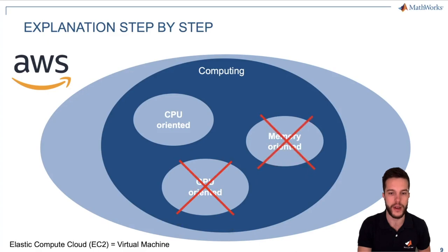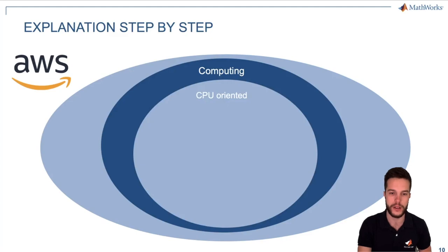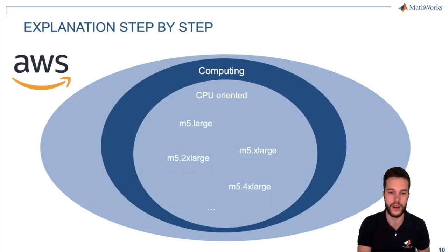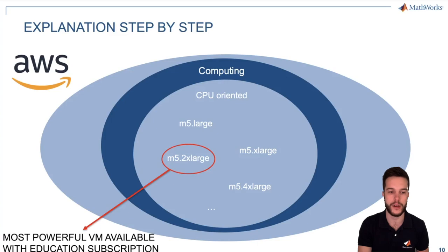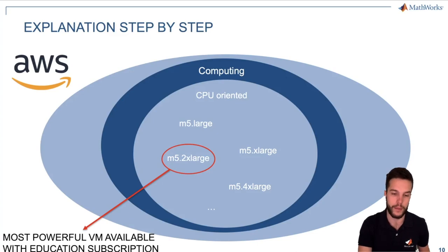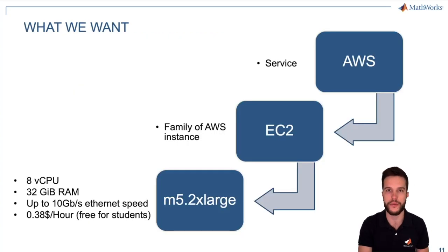In our case, we select CPU-oriented because it's the one we want to show you today. CPU-oriented machines are classified based on their performance, RAM, processor, and so on. You can see the different types you can use with your free subscription. In particular, the M5-2xlarge is the most powerful virtual machine you can use for free with your student subscription. Of course there are more powerful machines, but we cannot use them without paying. If you want to use a more powerful machine, you can simply pay and follow the same steps.